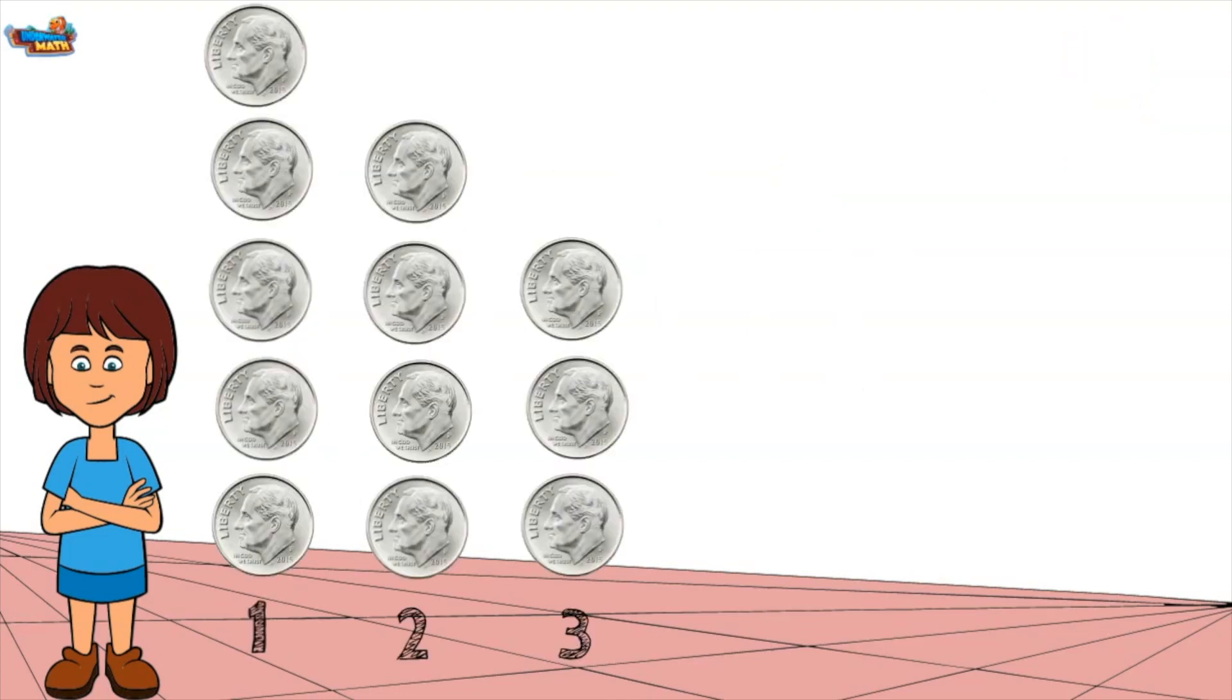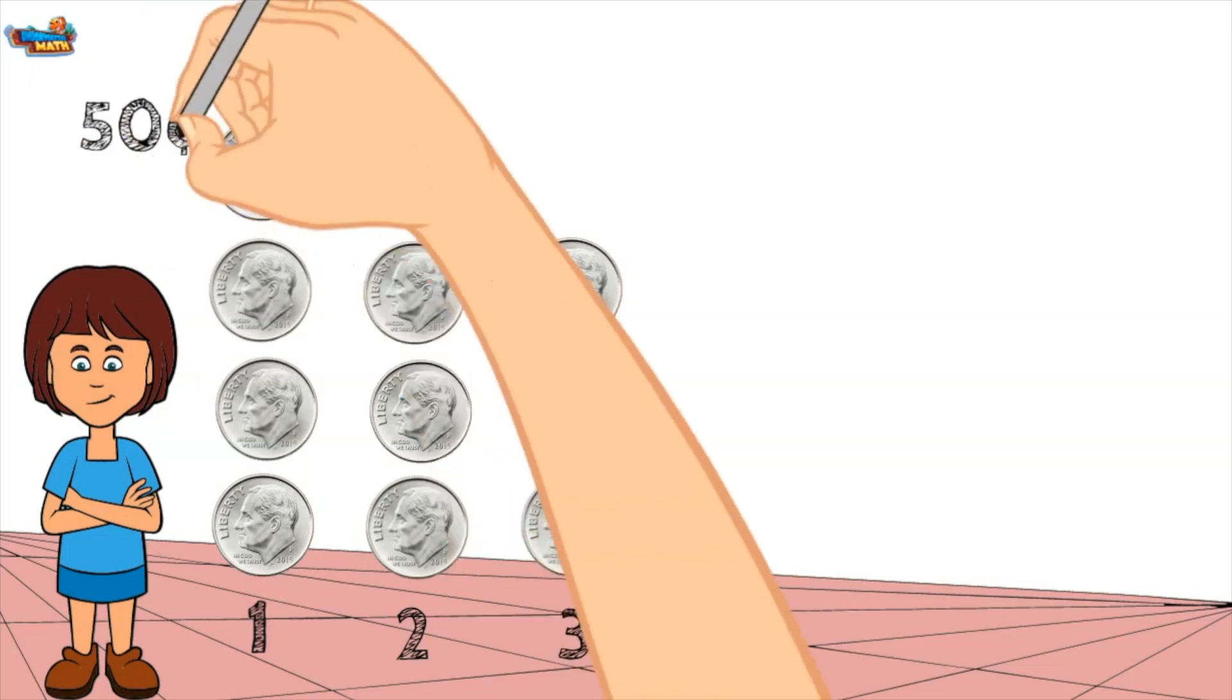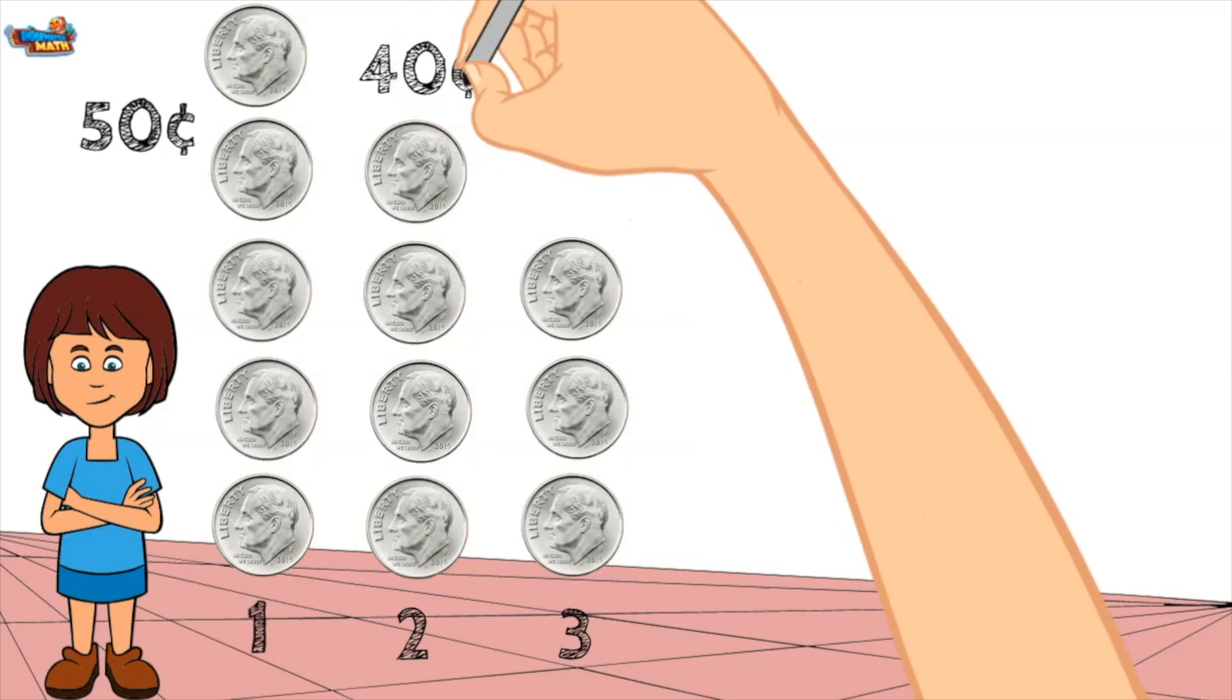Patterns can also be represented with money. Here is a group of coins. I am going to find the value of each of the groups of coins. Group 1 is 50 cents, the second group is worth 40 cents, and the third group is worth 30 cents.